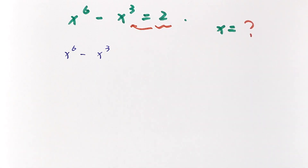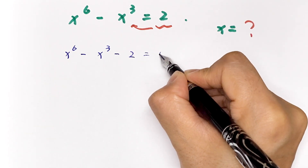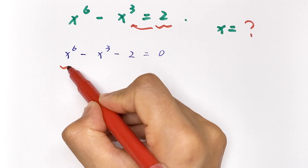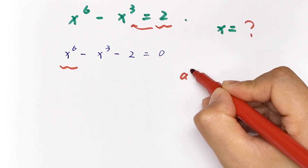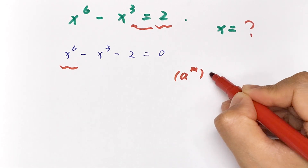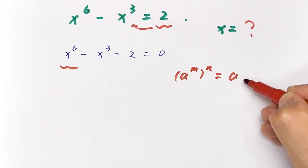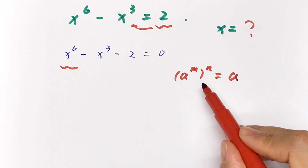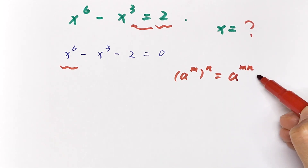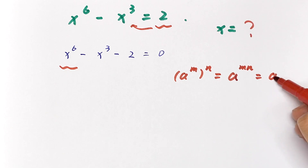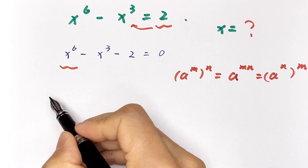Our equation is x to the power 6 minus x cubed equals 2. We move the 2 to the left side: x to the power 6 minus x cubed minus 2 equals 0. Now we apply the exponential rule that a to the power m, raised to the power n, equals a to the power m times n.